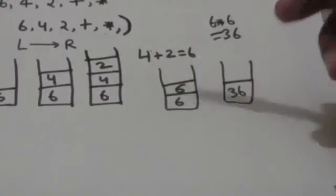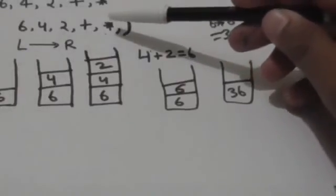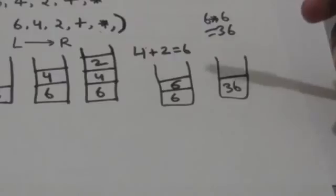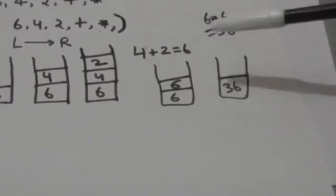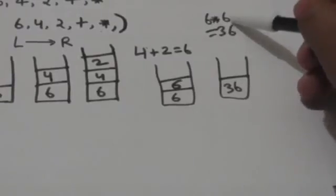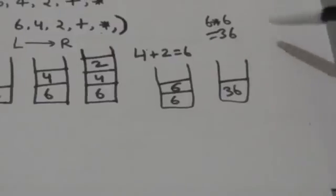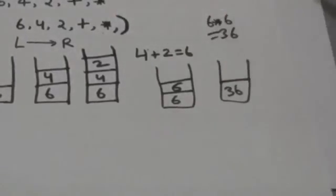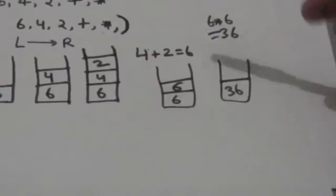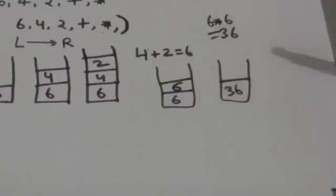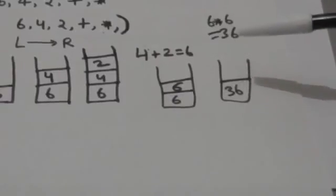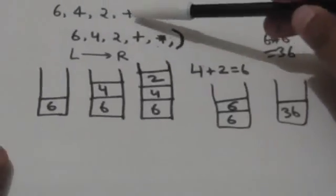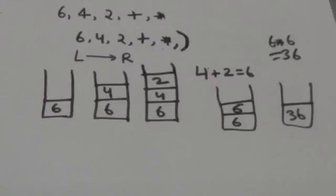The next element is the star operator, representing multiplication, so we remove the two top elements from the stack — 6 and 6 — and evaluate 6 × 6 = 36, and push 36 into the stack. The next element in the expression is the right parenthesis, so we stop. The top element on the stack is the result: 36 is the required result after evaluating the given expression. Thank you very much.